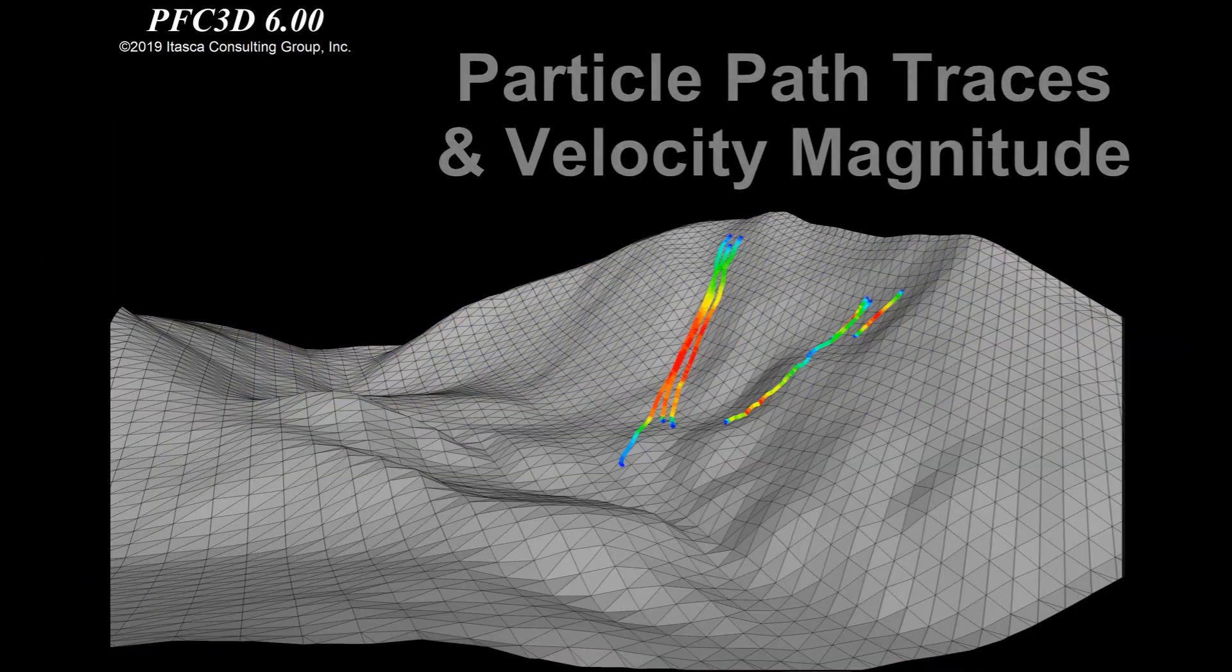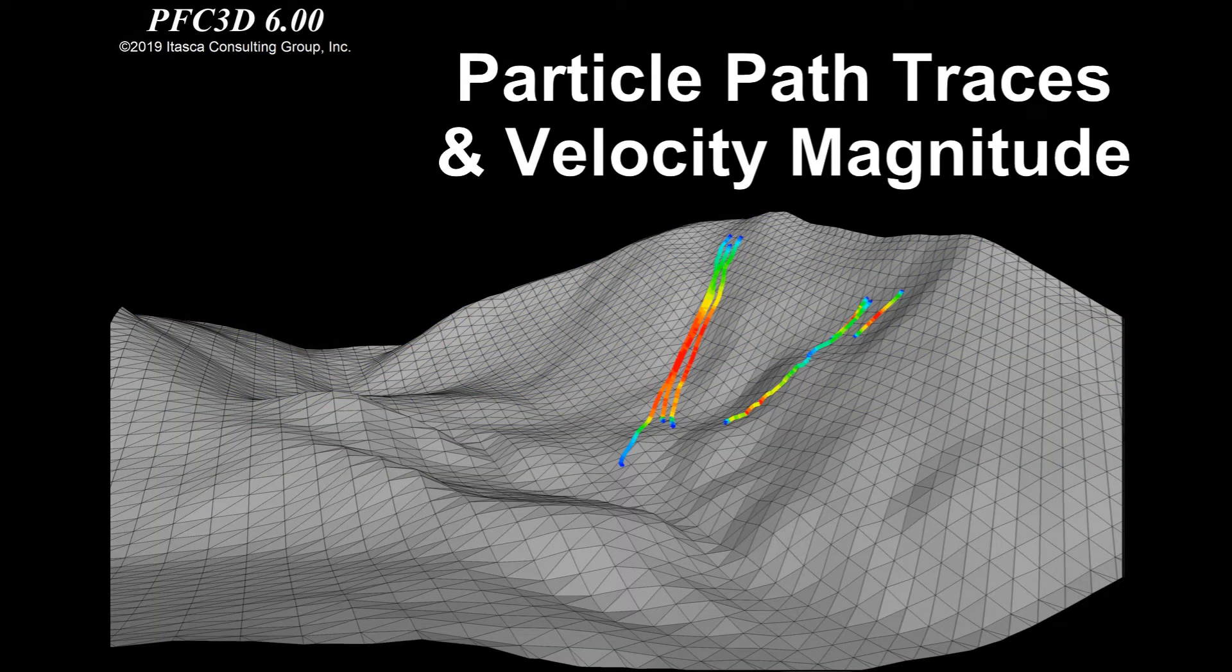The path covered by the rocks during the landslide can be shown by traces and are contoured according to their velocities.